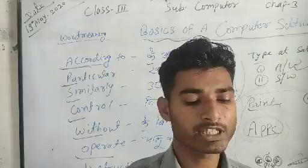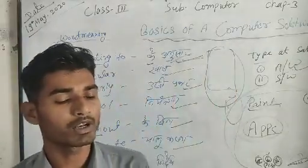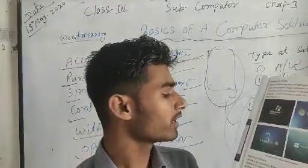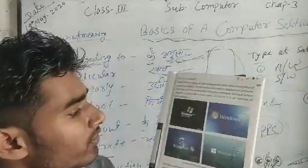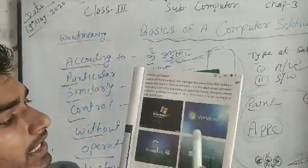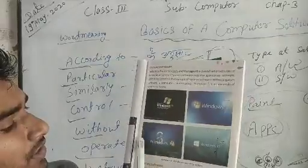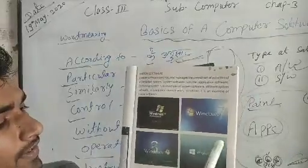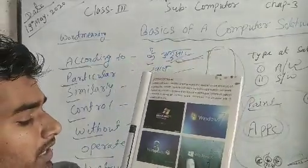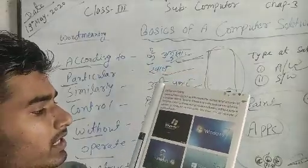Windows 7 is an example of system software. This is the Windows 7 screen. Other examples include Windows XP, Windows 8, and Windows 10. What is an operating system?